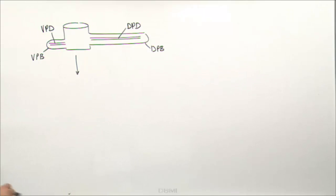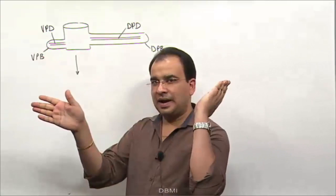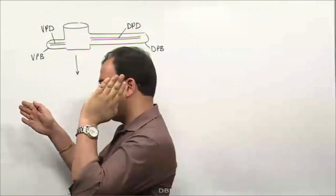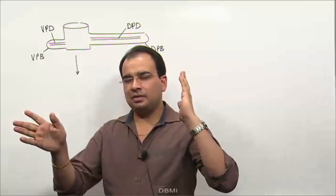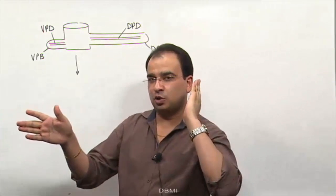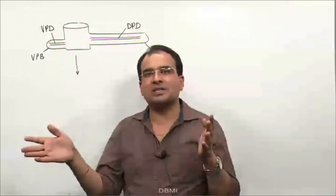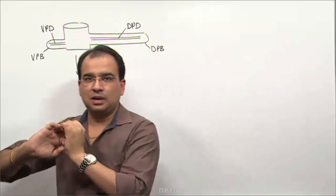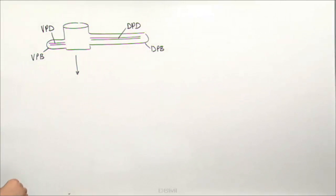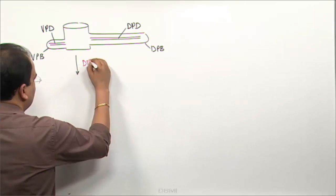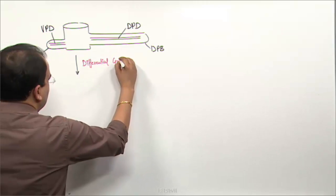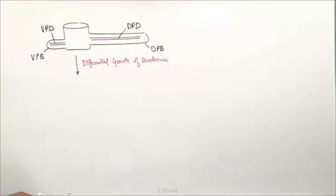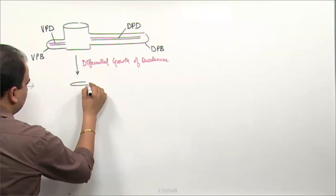The first question is how the ventral and dorsal pancreatic buds will fuse with each other. They use the word axial rotation, but the actual mechanism is differential growth — one side of the wall of the duodenum grows faster and the other reduces in size. So the ventral pancreatic bud goes around and comes to the dorsal side. Differential growth of the duodenum brings both these buds together.